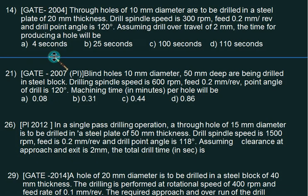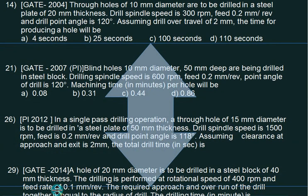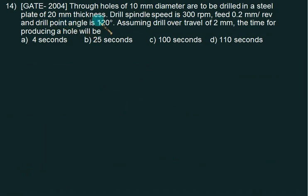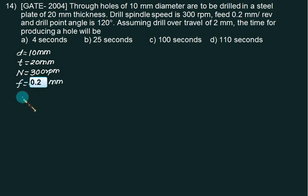We have a through hole of 10mm diameter to be drilled in a steel plate of 20mm thickness. Drill spindle rotates at 300 RPM, feed is 0.2mm per revolution. Point angle is 120 degrees. Diameter is 10mm, plate thickness is 20mm. Assuming over travel is 2mm. First calculate H equals D by 2 tan of beta. Beta is 60 degrees.